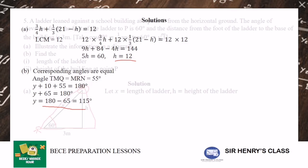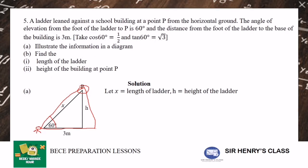And finally, a ladder leaned against a school building at a point P from the horizontal ground. The angle of elevation from the foot of the ladder to P is 60 degrees. And the distance from the foot of the ladder to the base of the building is 3 meters. Now tan 60 degrees is 1/2 and tan 60 is root 3. So here to illustrate the information in a diagram.